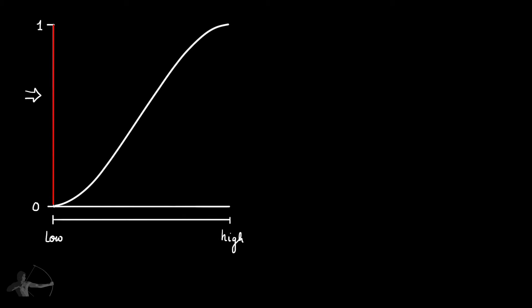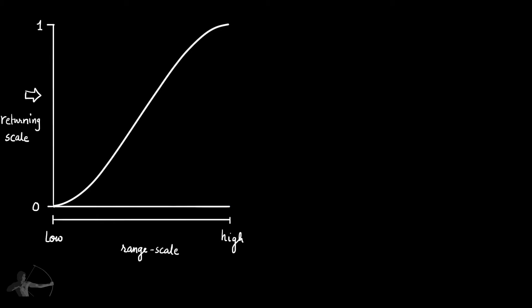The returning scale is where the final value will be returned, and the x-axis of this graph is the range scale — that's where we fit the range provided to the smoothstep function. Any value provided within this range will be mapped onto this graph, and wherever the graph hits the returning scale, that value will be returned by the smoothstep function.